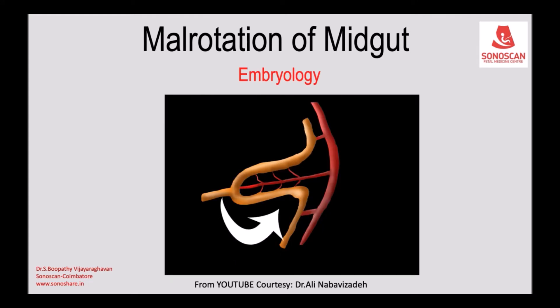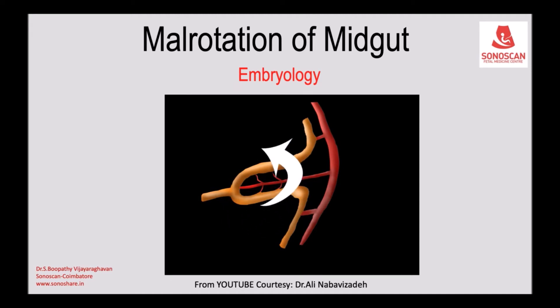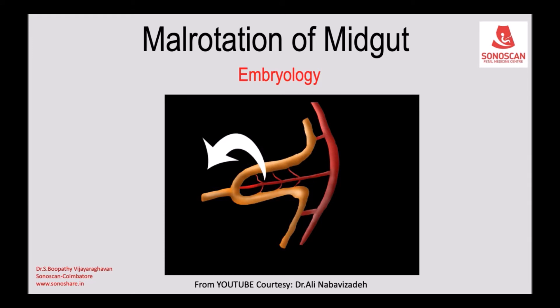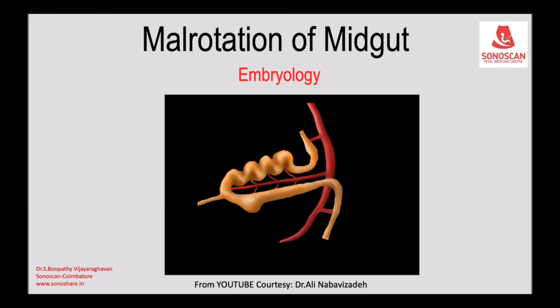As the midgut lengthens, it also rotates 90 degrees counterclockwise around the axis of the combined superior mesenteric artery and umbilical cord. The cranial limb of the midgut, now on the right side of the umbilical cord, becomes highly convoluted. The caudal limb, now on the left side, grows a small cecal bud.